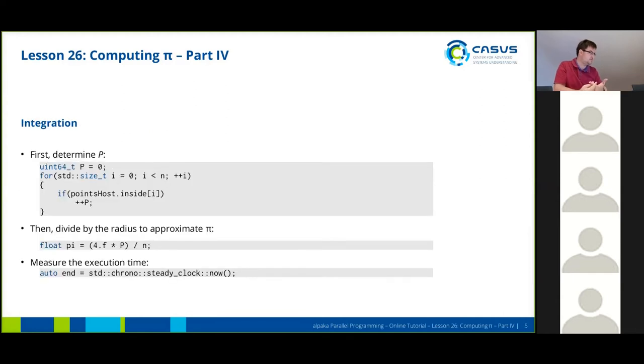After we obtain the results and are back on the host, we first have to determine the number of points that are inside the circle. This is done by a simple for loop and we just increase our counter every time we find a point that's inside the circle.